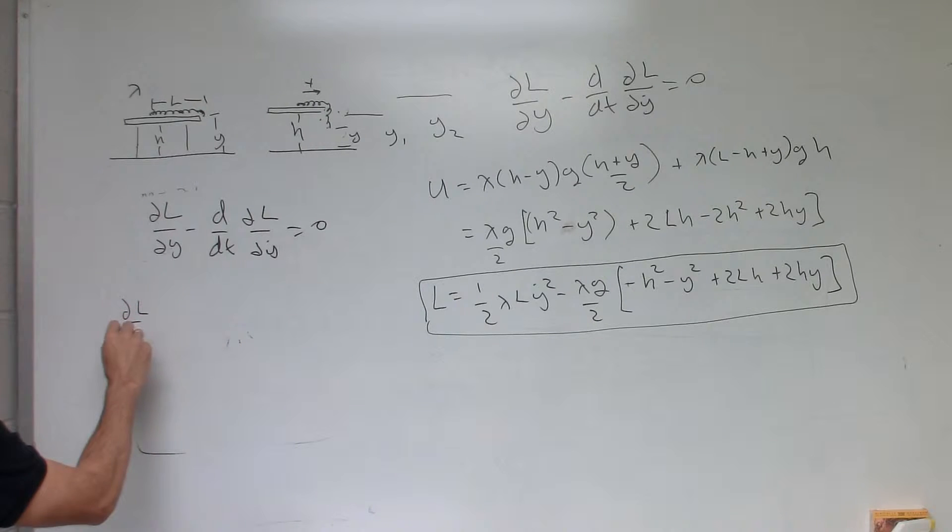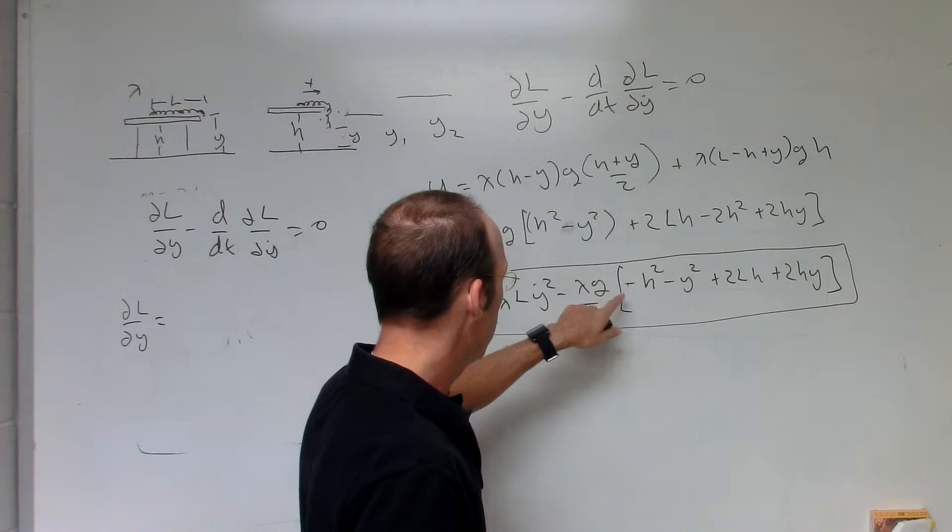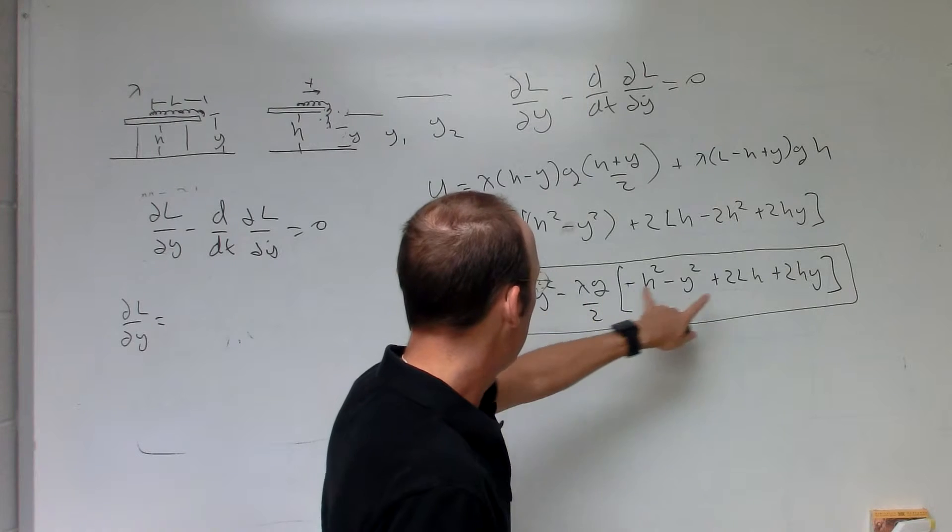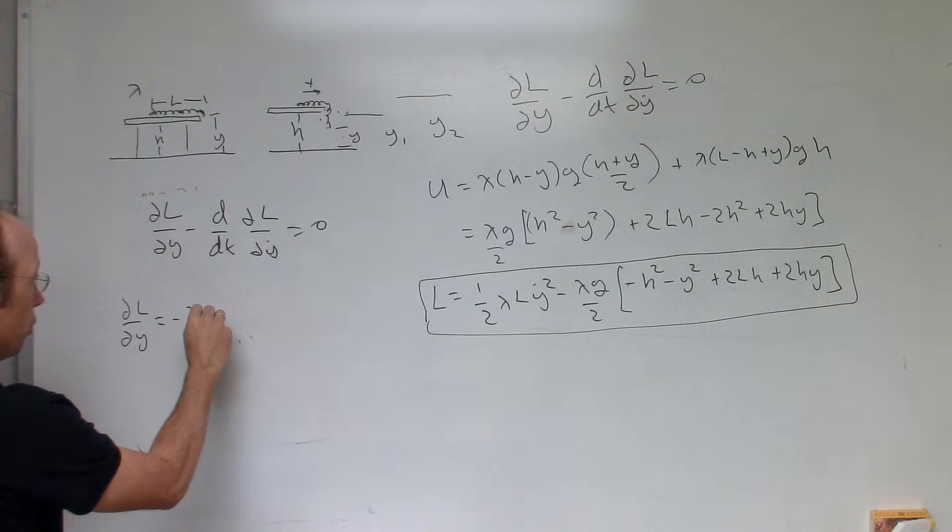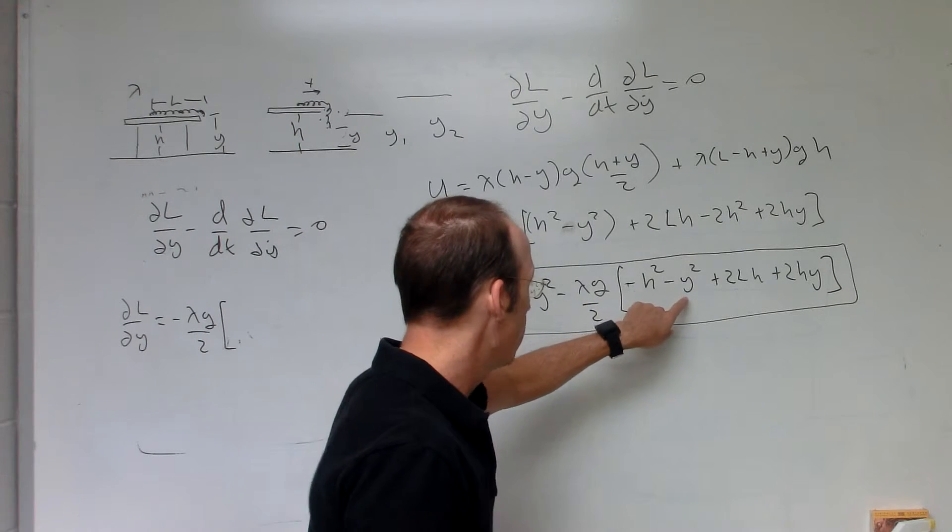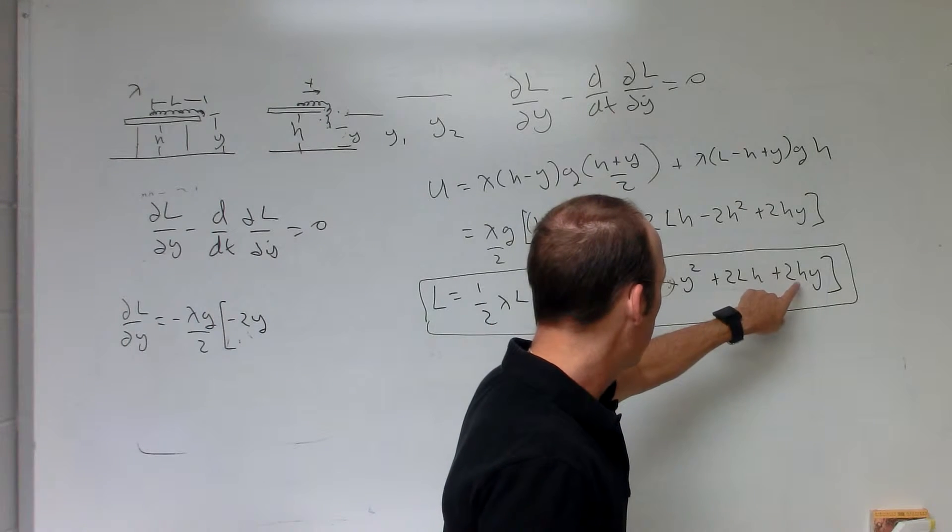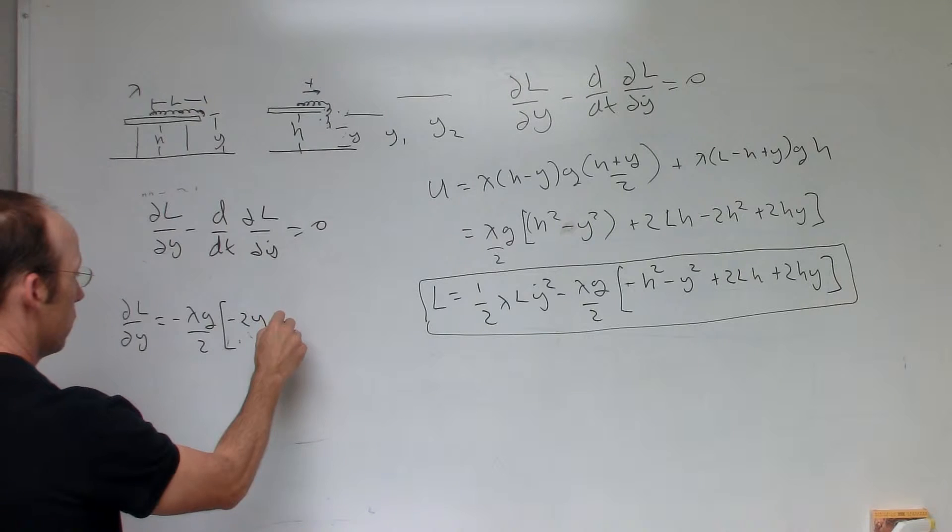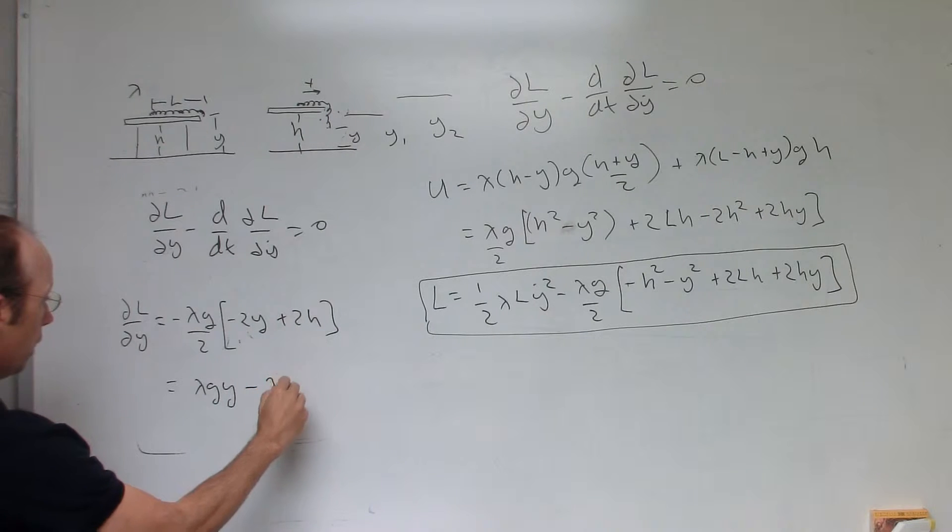So let's do partial of L with respect to y. Okay, let's look at my Lagrangian. There's no y there. That's a g. Okay, so I'm going to get this times that. So let's just put this term out here. I get negative lambda g over 2 times the derivative of the stuff inside. h is constant. So I get negative 2 y. And then I have a 2 h.